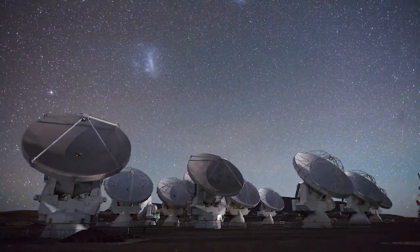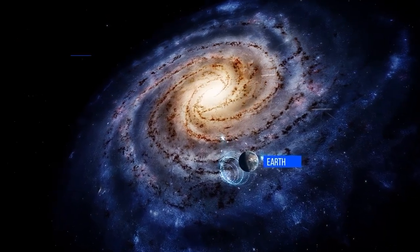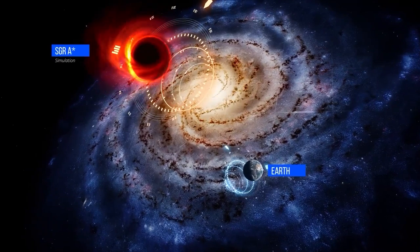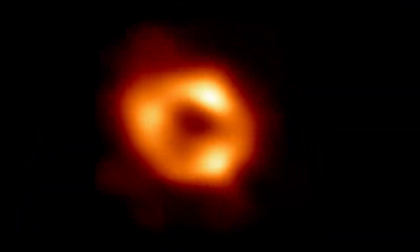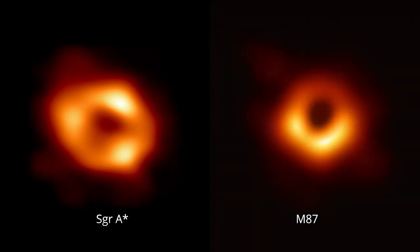The black hole feeds on the material in its near surroundings, such as gas clouds, asteroids, or even stars, that may get too close and be torn apart by gravitational tides. The new image reveals that the event horizon of Sagittarius A star is 51.8 micro arc seconds across the sky.